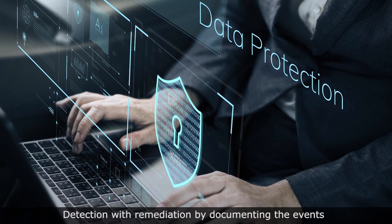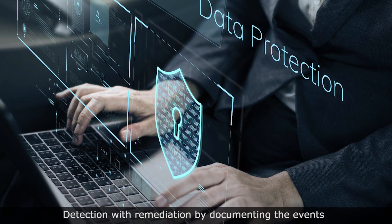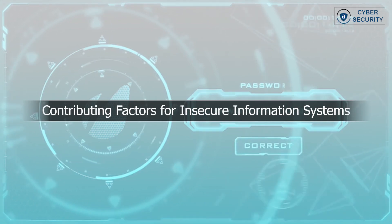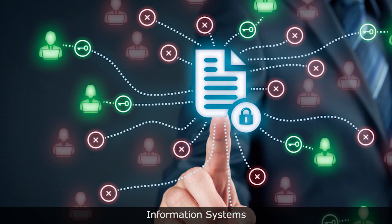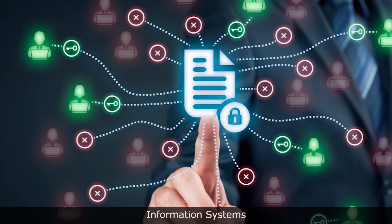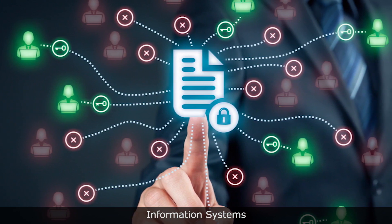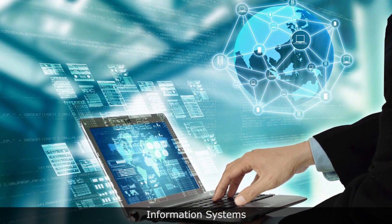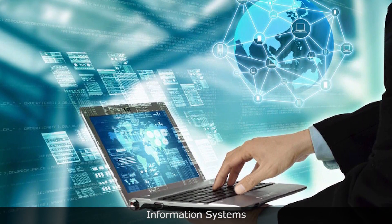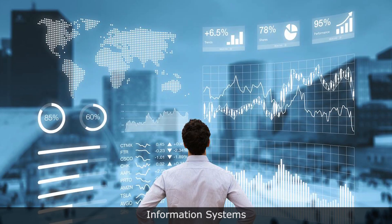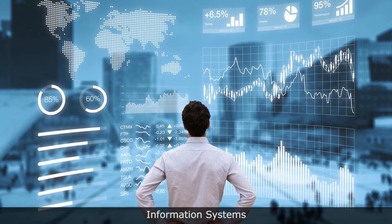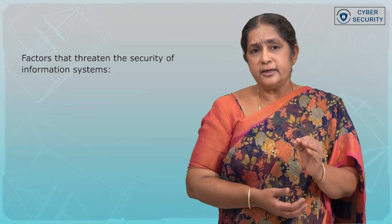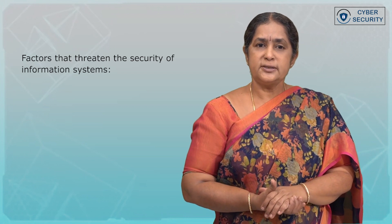Information system security deals with all forms of data protection. Information systems are the integral part of any organization's activities and processes. Therefore, information systems function properly by relying on individuals, companies, and sometimes even government. A devastating situation may arise when a proper information system is not in place. There are certain factors that have been identified that threaten the security of information systems.